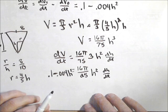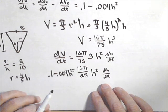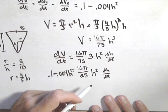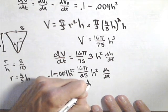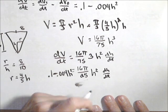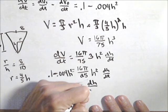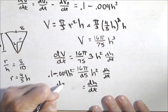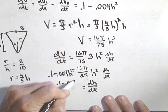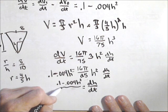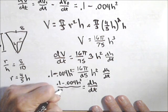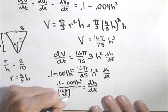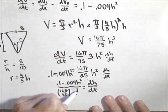Okay, now what I'm going to do is I'm going to see what's going on with dh/dt. So I'm going to solve this for dh/dt. So I get dh/dt equals (0.1 minus 0.004h²) over (16π/25 h²).